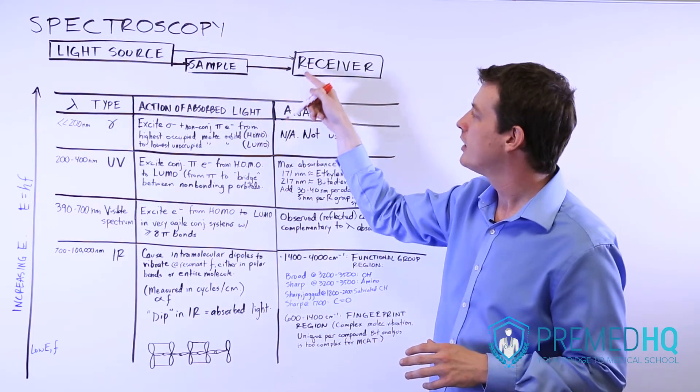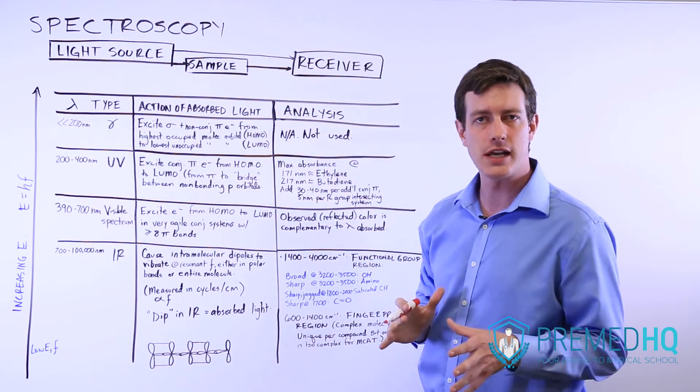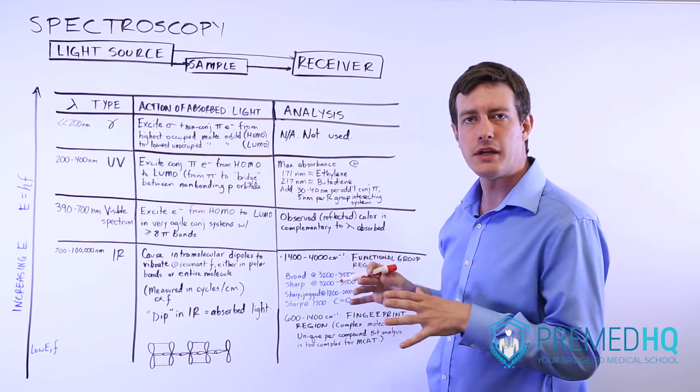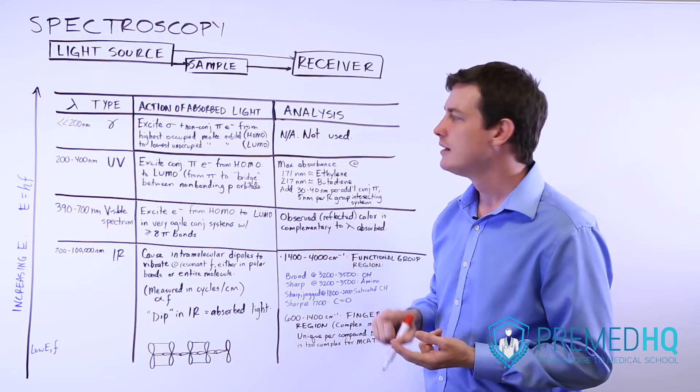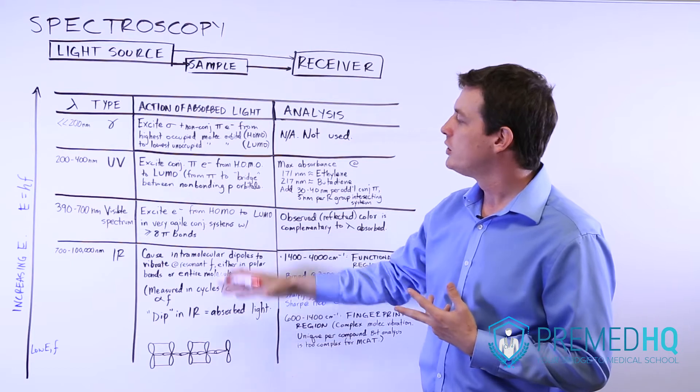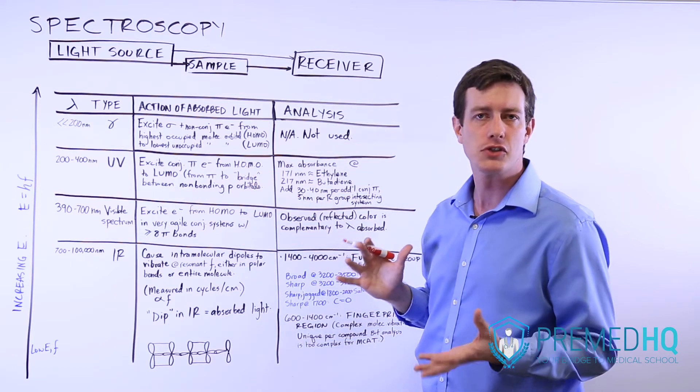What you do is you compare the absorption of the light that passed through the sample and that tells you information about what was present, whether different functional groups were present, whether the molecules were absorbing the light for certain reasons.